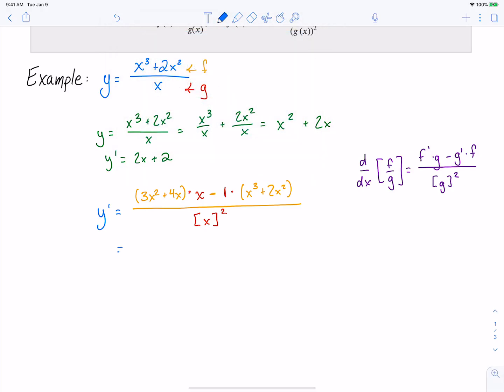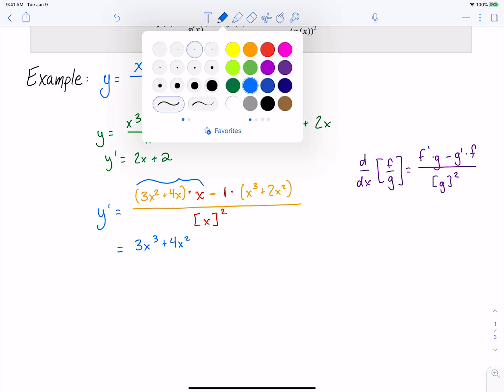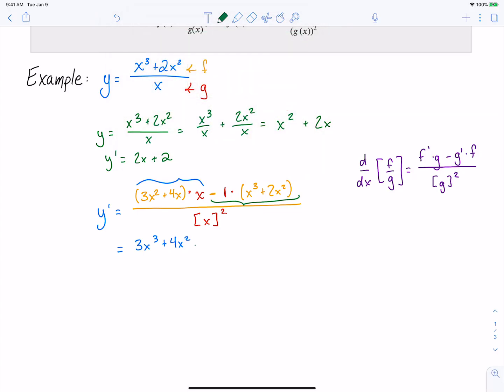Let's simplify this. So we've got a little bit of a distributive property right there. So we get 3x to the third plus 4x squared. And then we've got this minus 1 here. That minus 1 we need to distribute. So we get minus x cubed minus 2x squared, all divided by x squared. Simplifying the top, we've got some like terms. We are going to get 2x to the third plus 2x squared over x squared. We can put each of our terms over x squared and then cancel out our x's and we get 2x plus 2. So we got the exact same thing using the quotient rule that we did using the power rule.